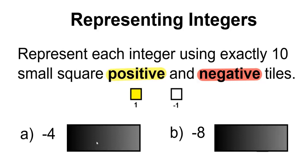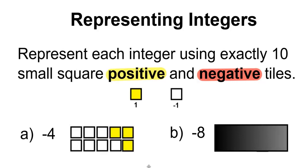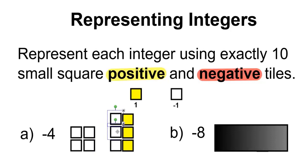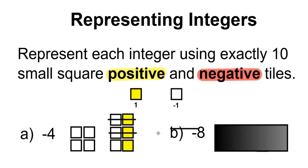A. For negative 4, this will be represented by 7 negative tiles and 3 positive tiles. Cancel out the zero pairs, and you're left with negative 4.